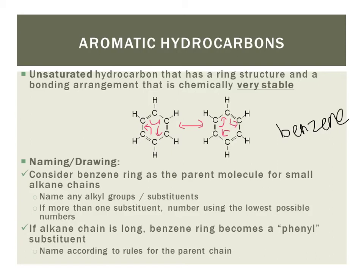There are two things we have to keep in mind for naming when we have an aromatic hydrocarbon. When the alkane chain is small, we look at the benzene ring as the parent molecule. And we name any alkyl groups or substituents coming off of the benzene ring and we use the parent name benzene. But if the alkane chain is longer, then we name the benzene ring as any other substituent using the name phenyl. And we just name the compound according to the rules for alkanes or alkenes or alkynes as we normally would.